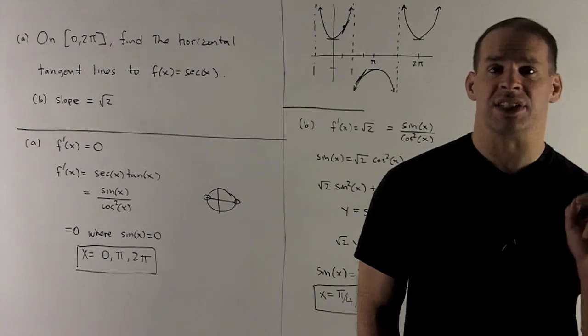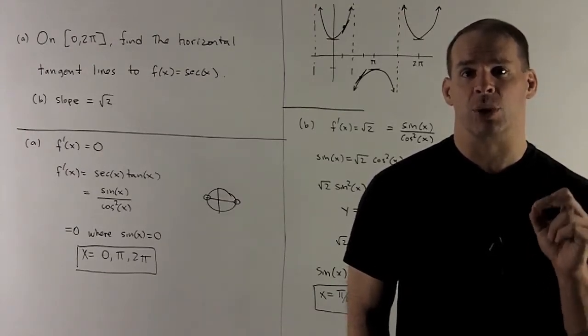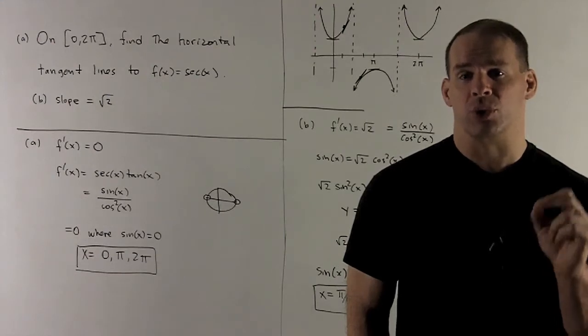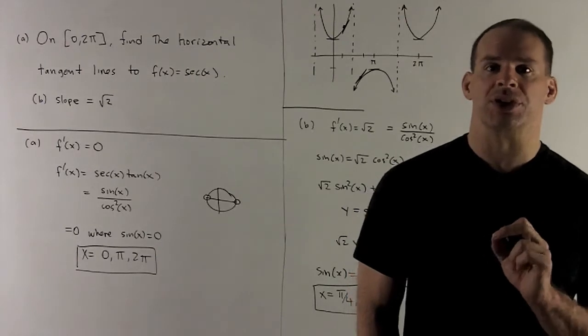We're going to take the derivative of our f. The derivative of secant is sec(x)tan(x). For a horizontal tangent line, that means the slope is 0. So I want to know where the derivative is equal to 0, or where sec(x)tan(x) is equal to 0.